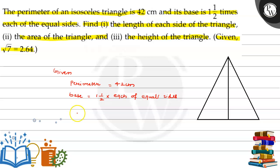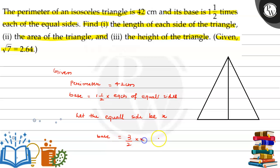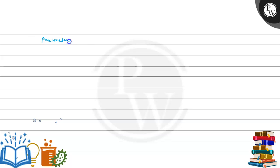So first of all, I am writing what's given. Perimeter is equal to 42 cm. Now, base is equal to 1 whole 1 by 2, which is 3 by 2. So if we let the equal side be x, then base is equal to 3x by 2. As we all know, perimeter is equal to sum of all the sides.